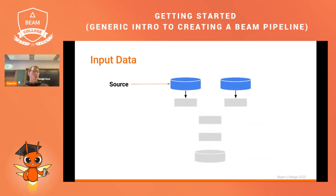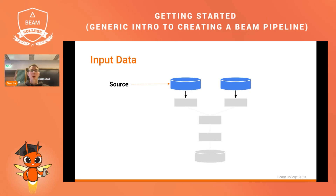In Beam pipelines, sources are used to read data from external data sources such as files, databases, or streaming services. There are a number of built-in data sources, but you can also define your own. In a pipeline you create a reader, which is responsible for reading the data from the source and producing the elements that are then processed in the pipeline.